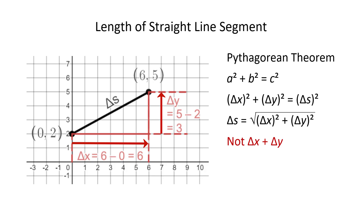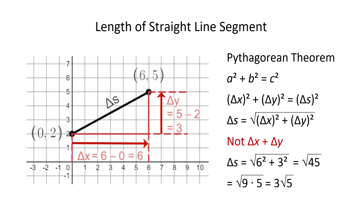Notice that this is NOT the same as delta x plus delta y. Using the numbers of this problem, we find that delta s is the square root of 6 squared plus 3 squared, which is 36 plus 9, or 45. Thus delta s is the square root of 45. This can be simplified as 3 times the square root of 5, which is about 6.7. That means this segment is 6.7 units long.